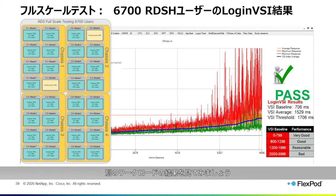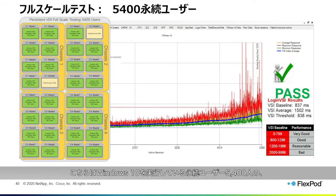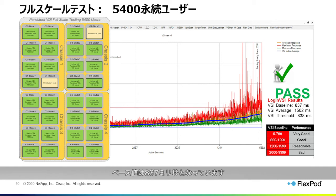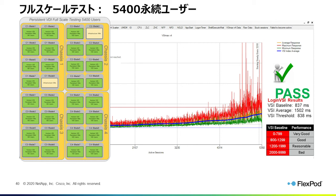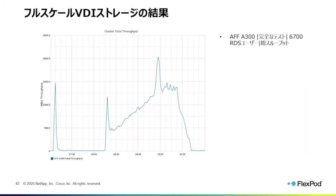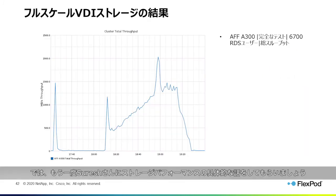Looking at additional results for different workloads, the full-scale test of 5,400 persistent users running Windows 10 achieved a baseline of 837 milliseconds with the average at the end — when all 5,400 users were running the workloads on the system — of 1,502 milliseconds, once again well below the threshold. I'll now pass back to Suresh to talk more specifically about storage performance.